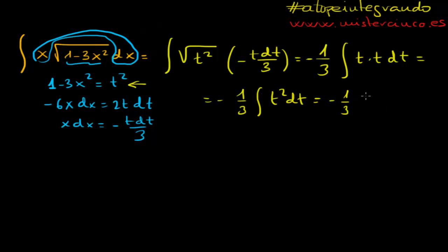So we can put this like minus 1 third of, now, you know, the integral of t squared. This is just for you to remember that integral of x to the power n dx, this always equals to x to the power n plus 1 over n plus 1, plus the constant C. This is always as far as n is not equal to minus 1.